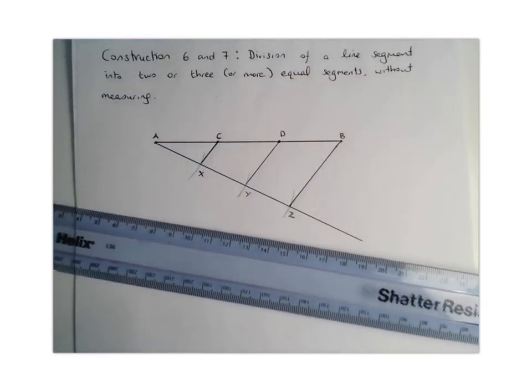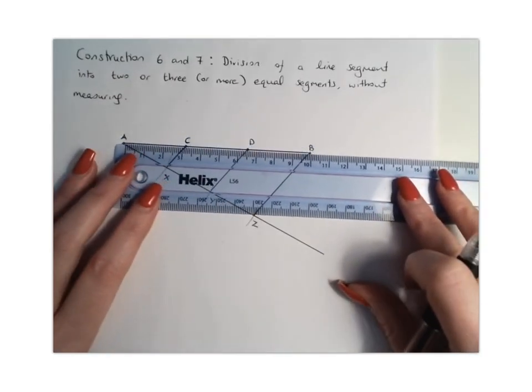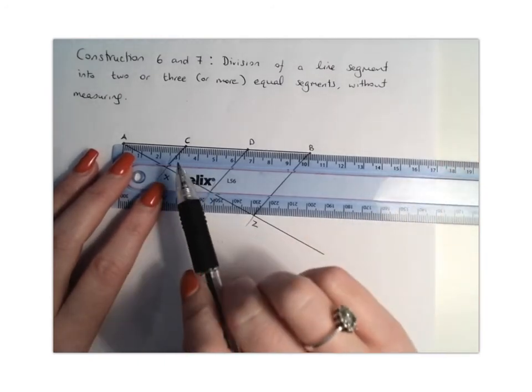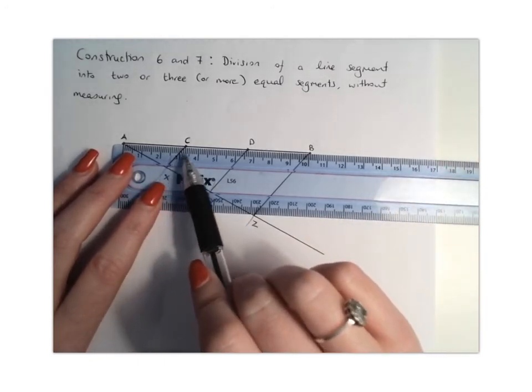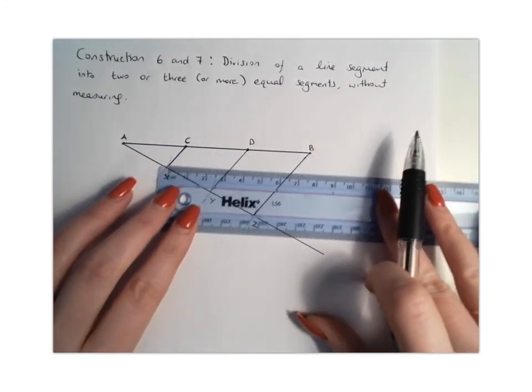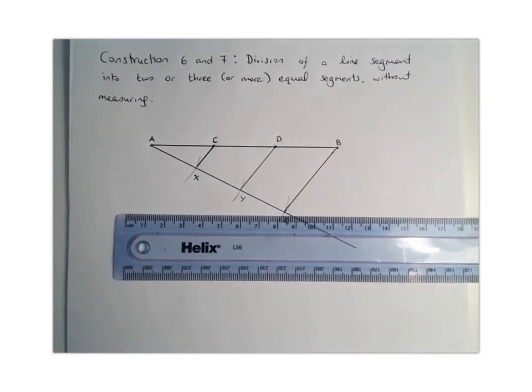So if you want to test it then, what we should notice is this line was originally 10 centimeters. So dividing it in three, we can see it's about 3.3 between each point, which means that we have done this correctly. So that's how you divide a line segment into three equal segments.